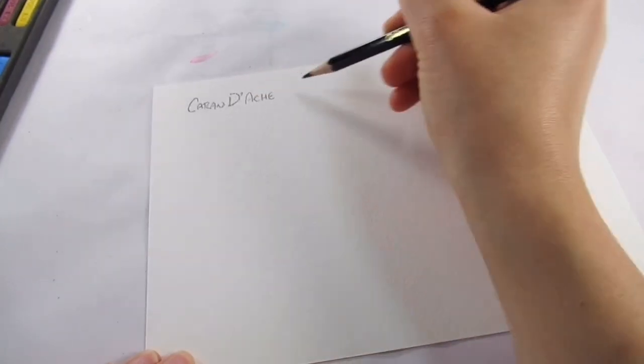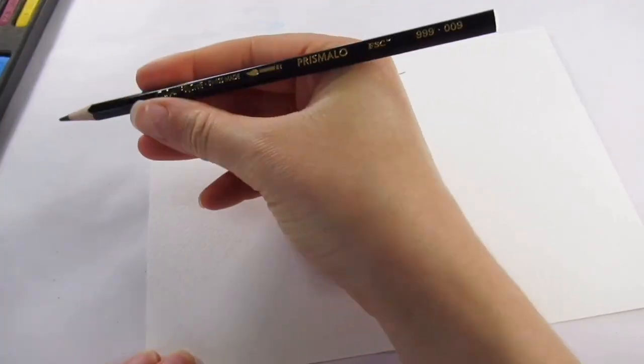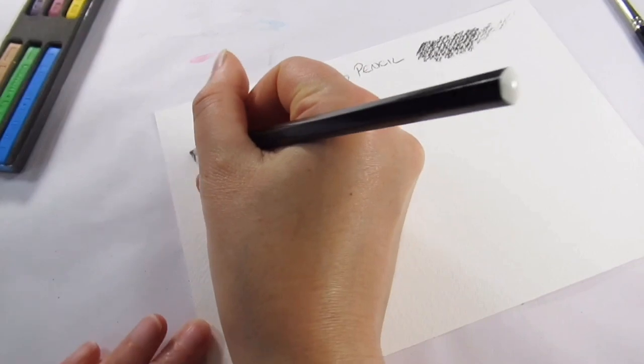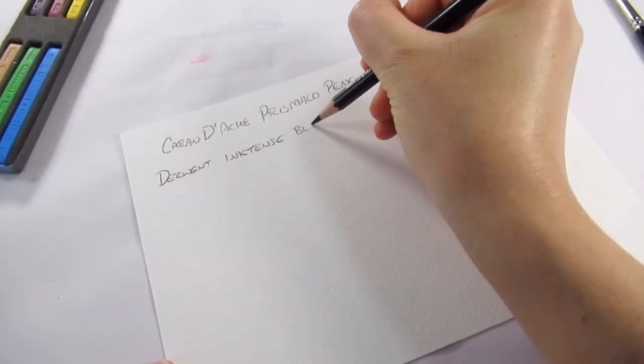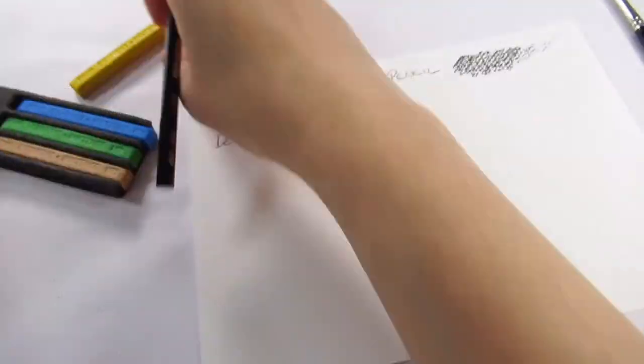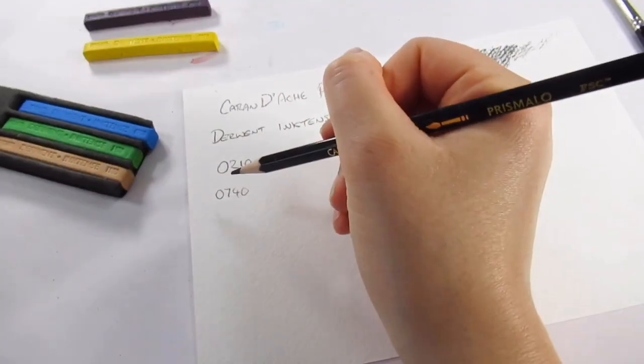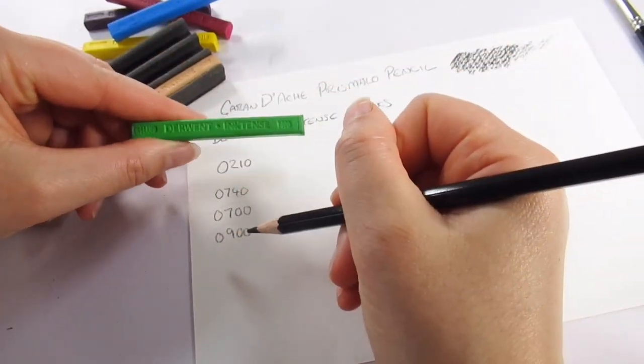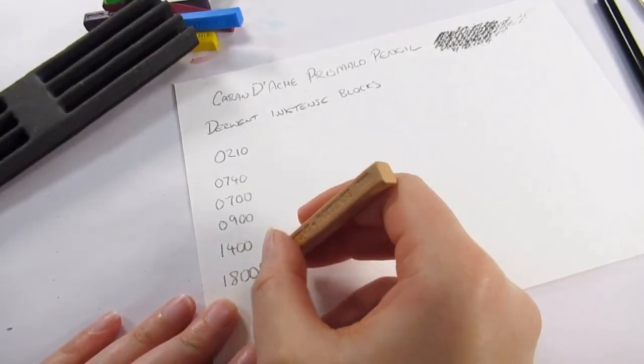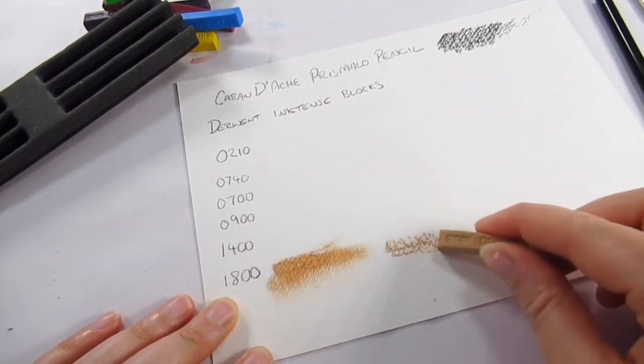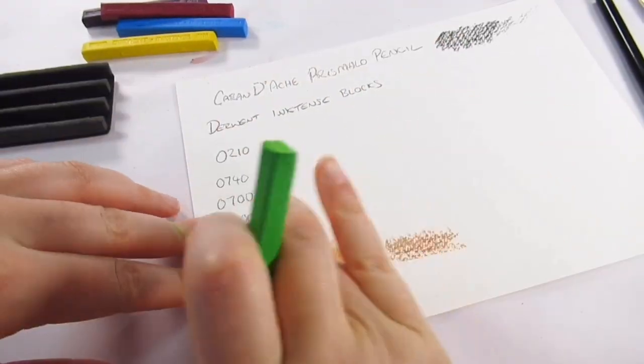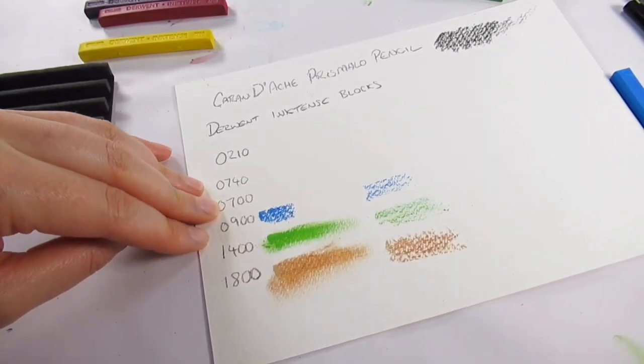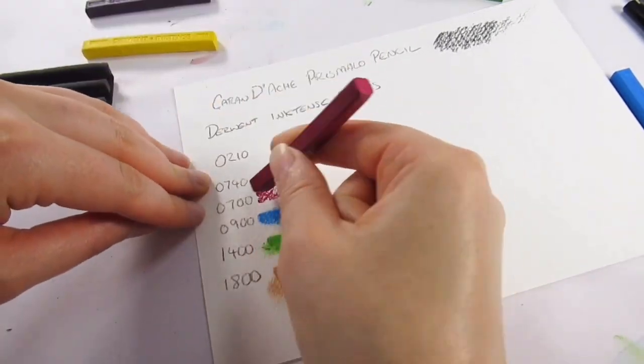Let's get into what's inside the box a little bit more. The pencil we have is a Caran d'Ache Prismalo pencil, hope I'm saying that right, and it is a water soluble pencil and it's very very very pigmented. We of course have the Derwent Inktense blocks and I don't have any color names but they do have color numbers. I bought some but I haven't actually got around to using any of the blocks so this is my first time really having a play about with them.